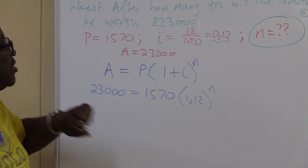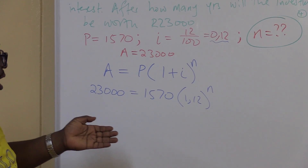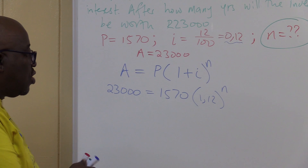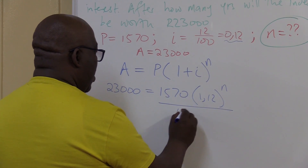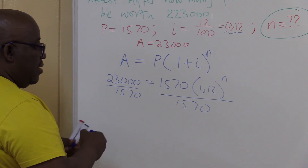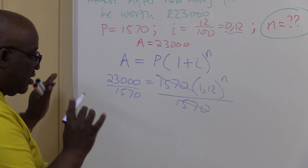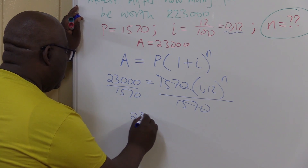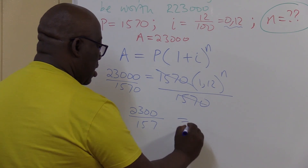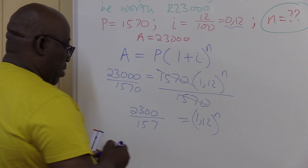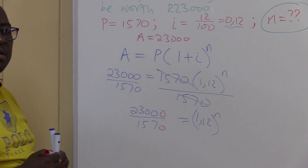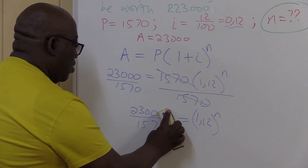From substitution, it becomes algebra — your bread and butter. What is the first thing to remove so that we can isolate n? Remove the 1,570 by dividing both sides by 1,570. So 23,000 divided by 1,570 is on the left, and 1.12 raised to the power n remains on the right. I've just cancelled these two zeros — 23,00 divided by 157 — and those zeros are no longer there because they cancel. That's what we have.